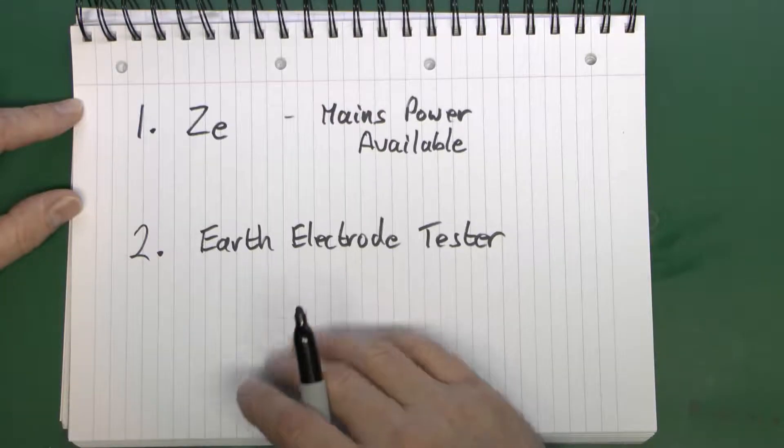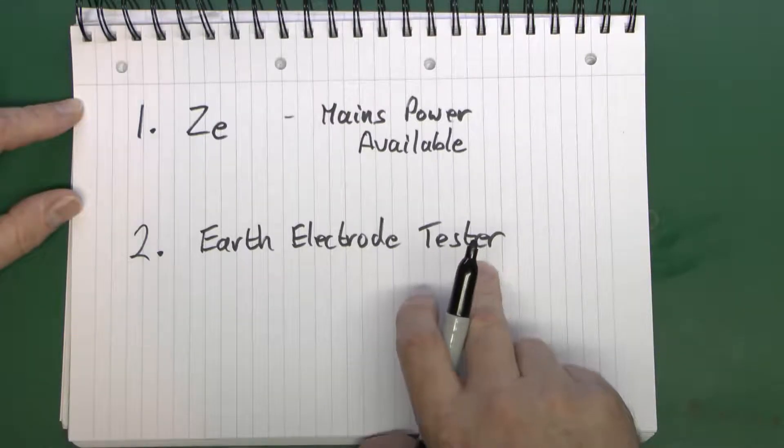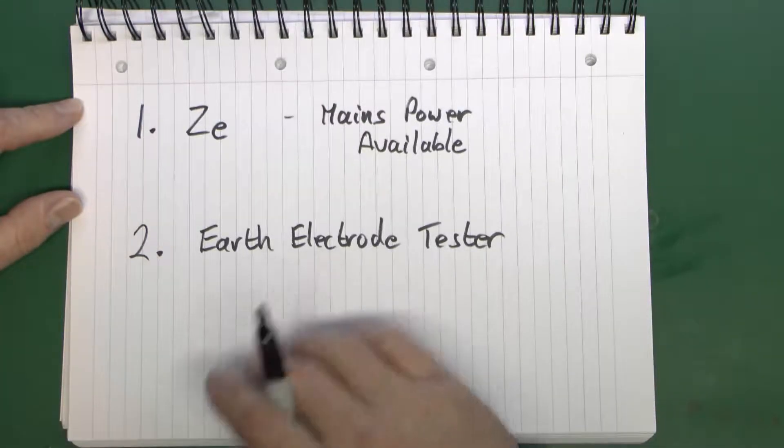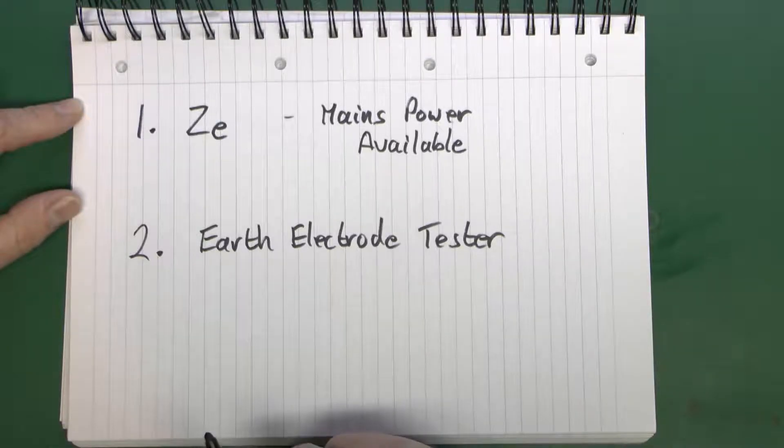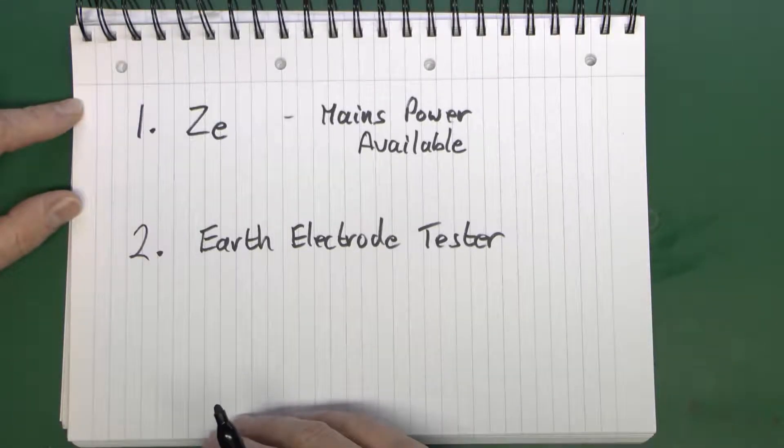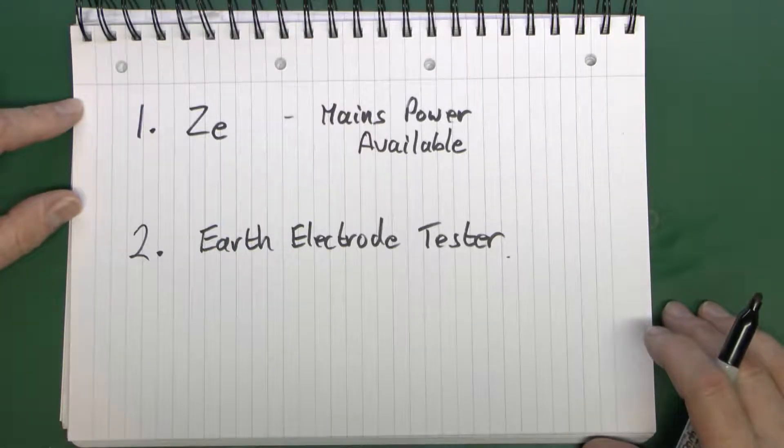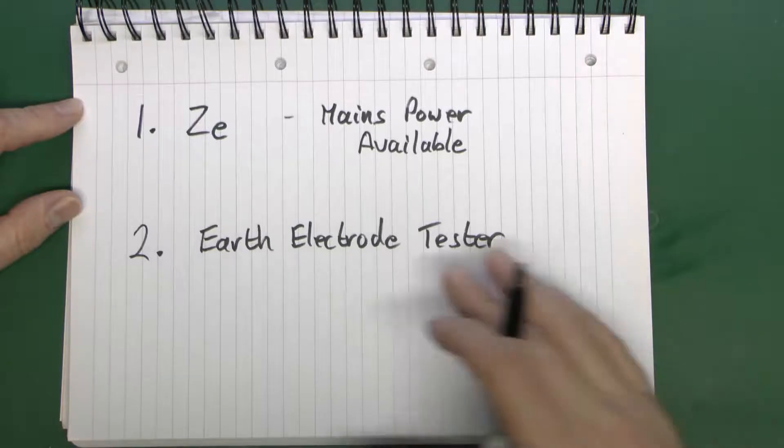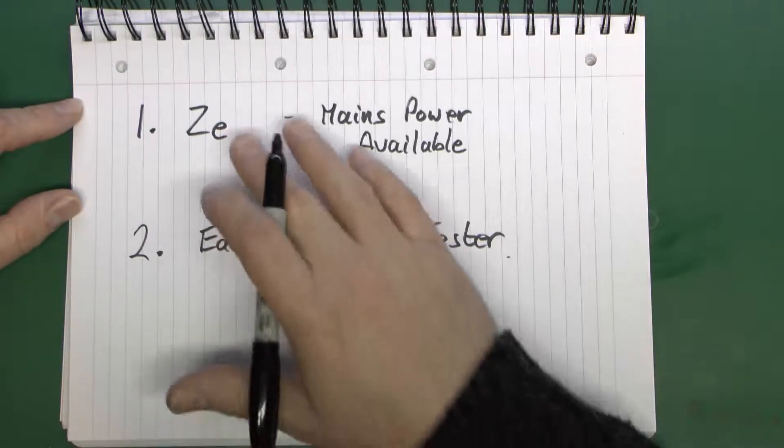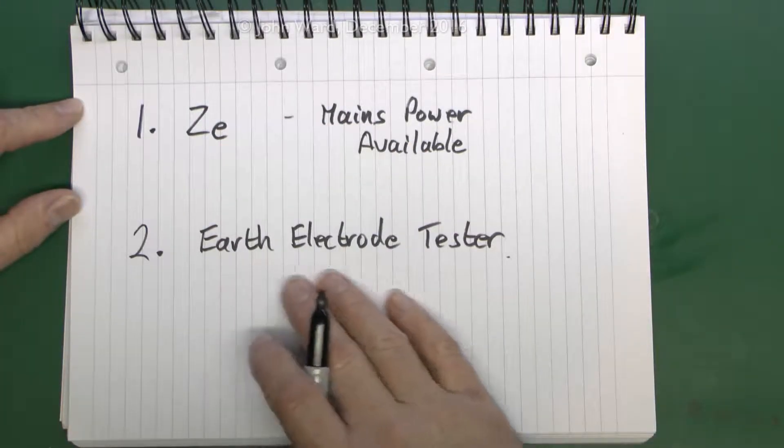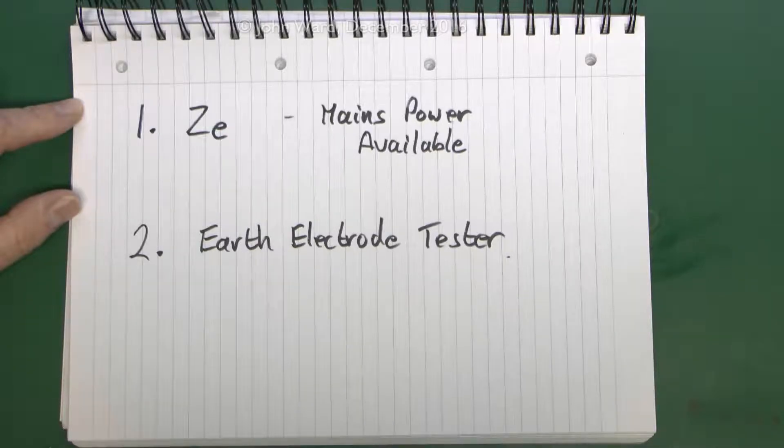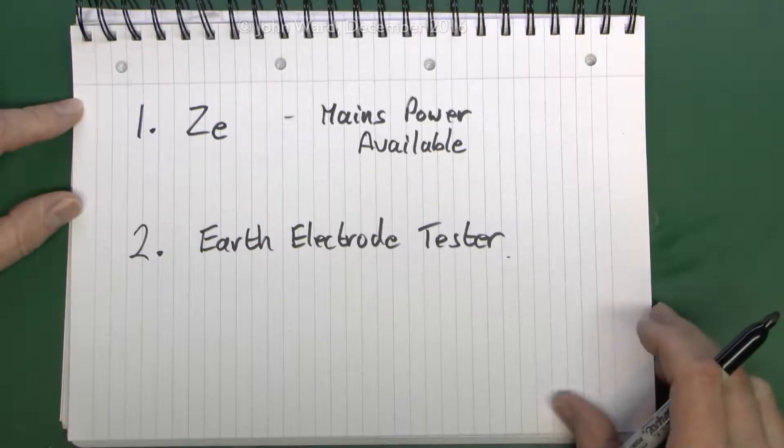Now plenty of multi-function testers have this built in, but certainly not all of them. If you are going to be putting earth electrodes in on a fairly regular basis, it's worthwhile to get one that does actually include this function. I've done a video on this before, so what we're going to have a look at is the procedure if you're going to use a specific testing piece of equipment.